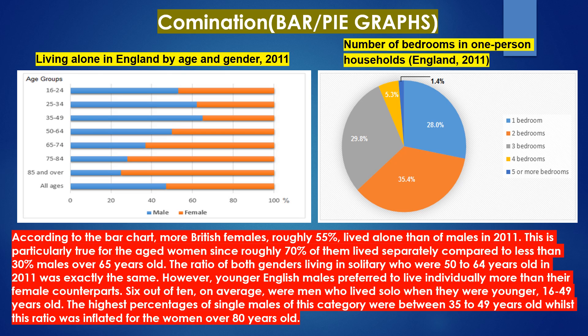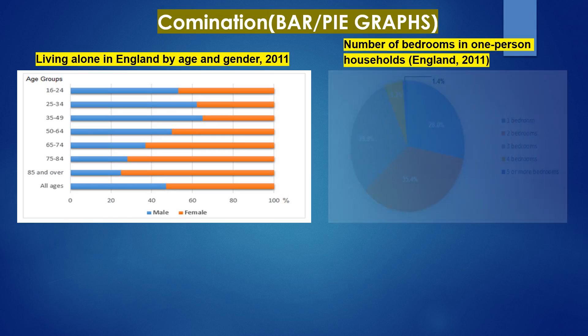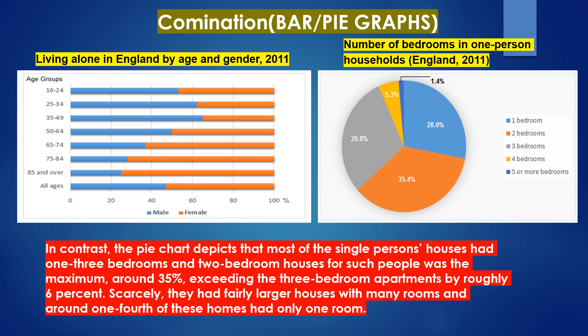Six out of ten, on average, were men who lived solo when they were younger, between 16 to 49 years old. The highest percentages of single males of this category were between 35 to 49 years old, whilst this ratio was highest for women over 80 years old. In contrast, the pie chart depicts that most single-person houses had one to three bedrooms, and two-bedroom houses were the maximum at around 35 percent, exceeding three-bedroom apartments by roughly 6 percent.